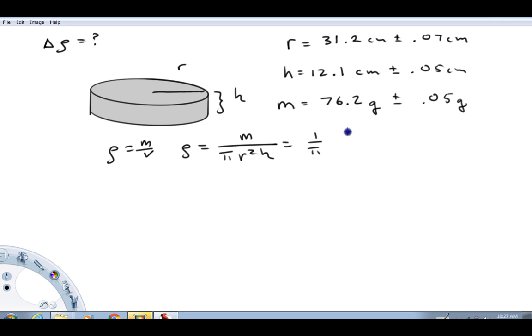So the density of this object can be written m over pi r squared h, or I could write that 1 over pi times m over r squared h. So now what I'm going to do is just treat the 1 over pi like a constant, and I'm going to calculate the differential of the density based on the uncertainties in the height, the radius, and the mass. And I'm going to use differentials to do that.